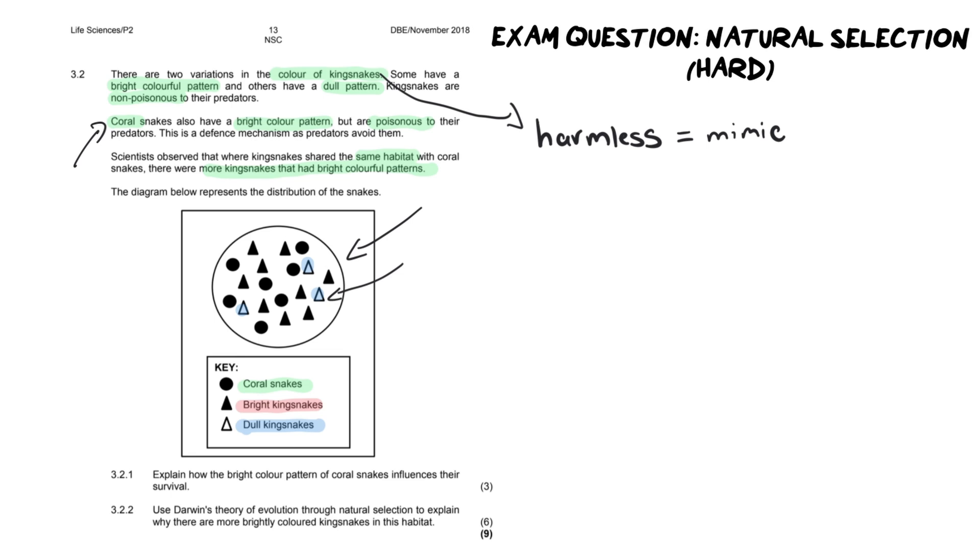Let's have a look at the questions. Question number one says, explain how bright color patterns of coral snakes influences their survival. Now it's for three marks. There's a good structure I always tell all my pupils to do for explain. You can use the words statement and reason or cause and effect, whichever one helps you. For this one, I'm going to use the cause and the effect structure. Now this one is out of three, which means there must be two effects and one cause. And yes, that's always how it works. There is always a cause with all the effects, or there's always a statement with the reasons attached to it.